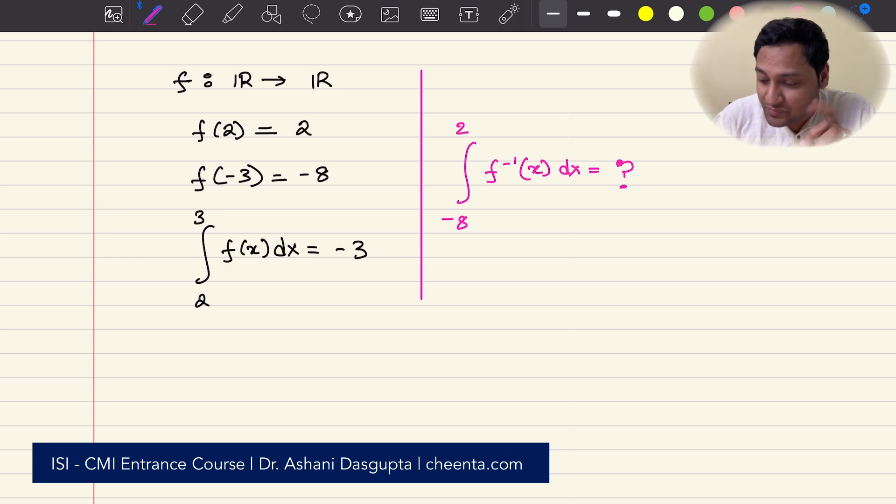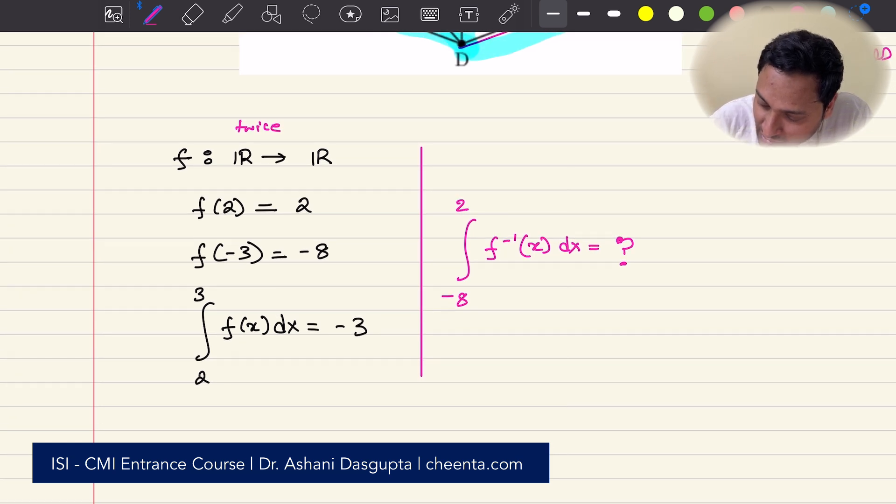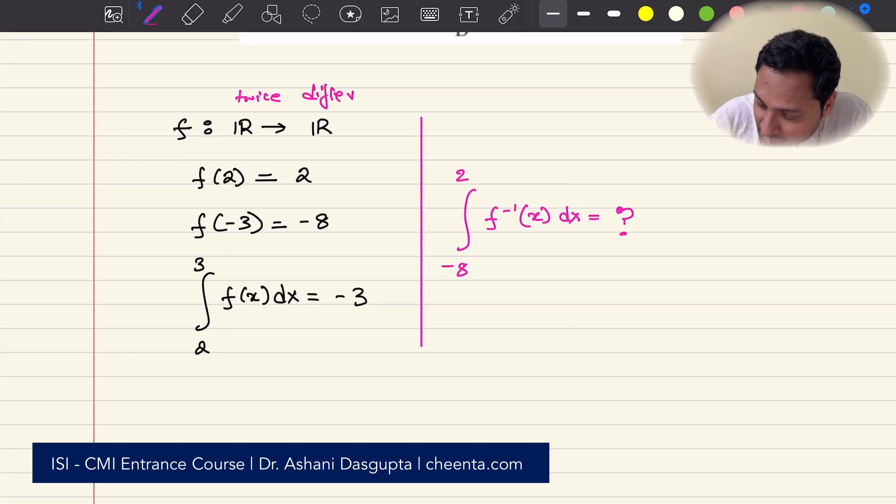First, I'll tell you the problem. The problem is this, that we have a function f from real numbers to real numbers. And this is actually a twice-differentiable function. Whatever that means. If you do not know differentiation, you might face a little difficulty here, don't worry. Whatever that means, f is that. It's a technical condition actually.